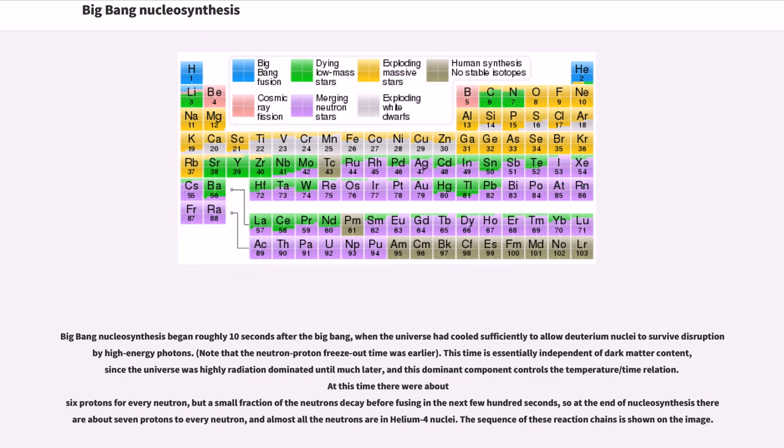Big Bang nucleosynthesis began roughly 10 seconds after the Big Bang, when the universe had cooled sufficiently to allow deuterium nuclei to survive disruption by high-energy photons. This time is essentially independent of dark matter content, since the universe was highly radiation dominated until much later, and this dominant component controls the temperature-slash-time relation. At this time there were about 6 protons for every neutron, but a small fraction of the neutrons decay before fusing in the next few hundred seconds, so at the end of nucleosynthesis there are about 7 protons to every neutron, and almost all the neutrons are in helium-4 nuclei.